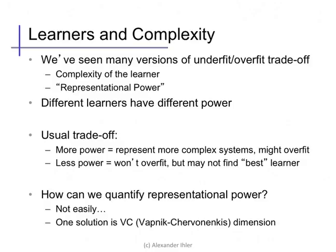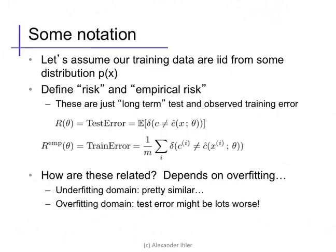First, some preliminaries. Let's assume that our training and our future test data are all independent and identically distributed from some distribution p of x. We'll define the risk as the long-term test error, so the expected error rate of our predictions over that distribution p. The empirical risk we'll define as the training error, so it's the risk on our finite collection of m data points, just the average error rate.